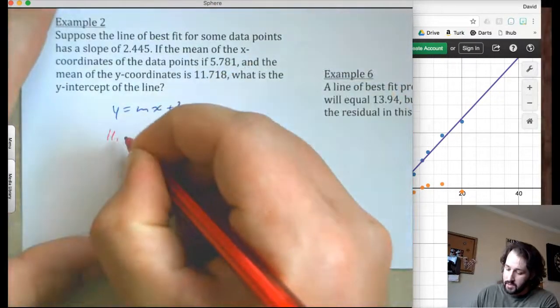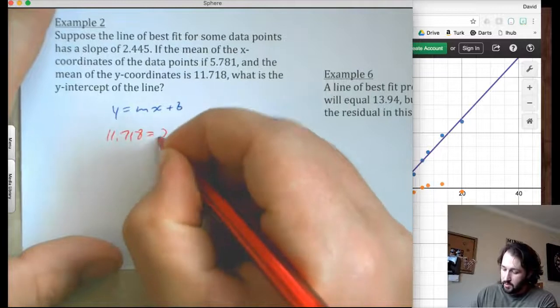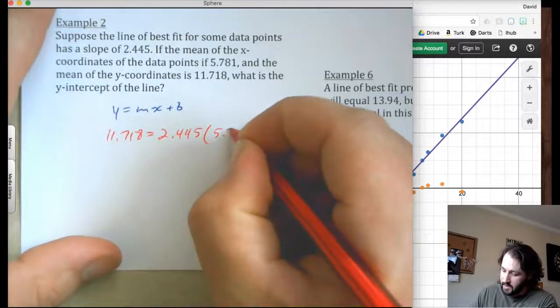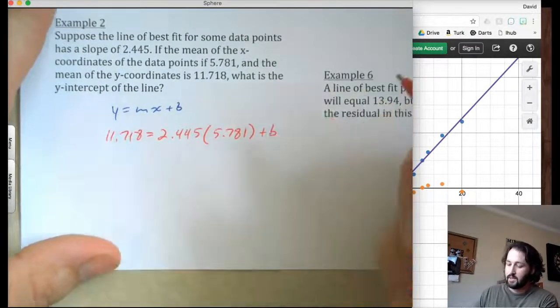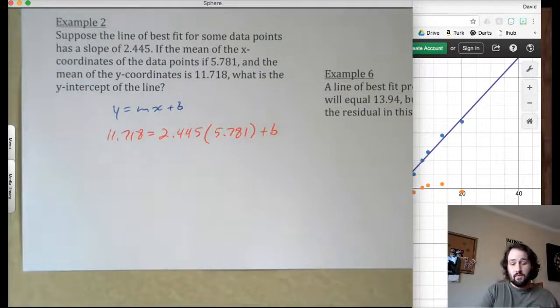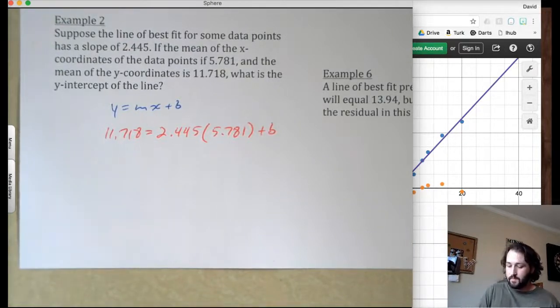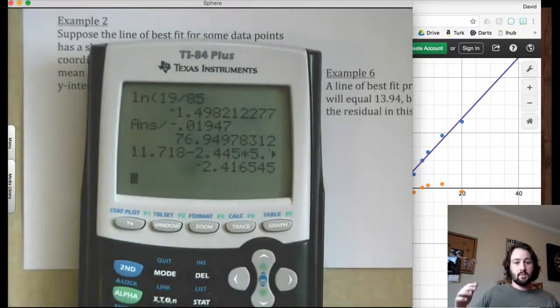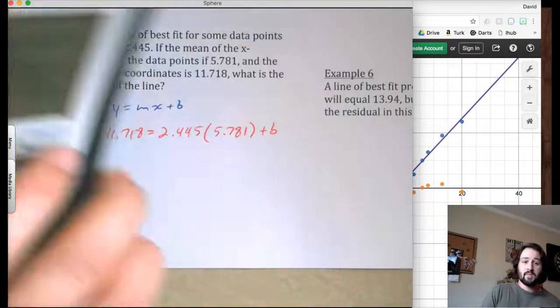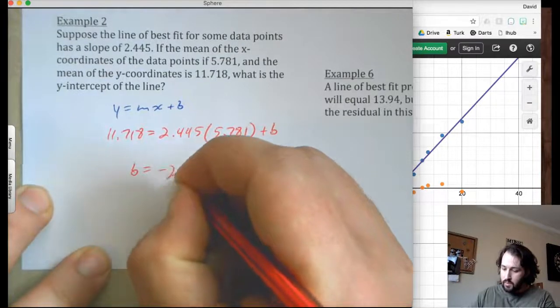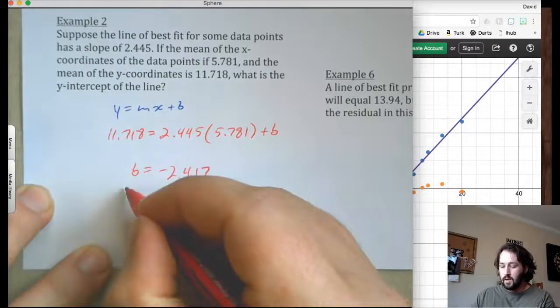So if y is 11.718, it tells me the slope is 2.445 times x, which is 5.781 plus my y-intercept. So it's just a matter of solving this. So 11.718 minus that 2.445 times 5.781. So you're just subtracting both of those things to the other side. So our y-intercept is negative 2.417. So b, the y-intercept, negative 2.417, y-intercept.